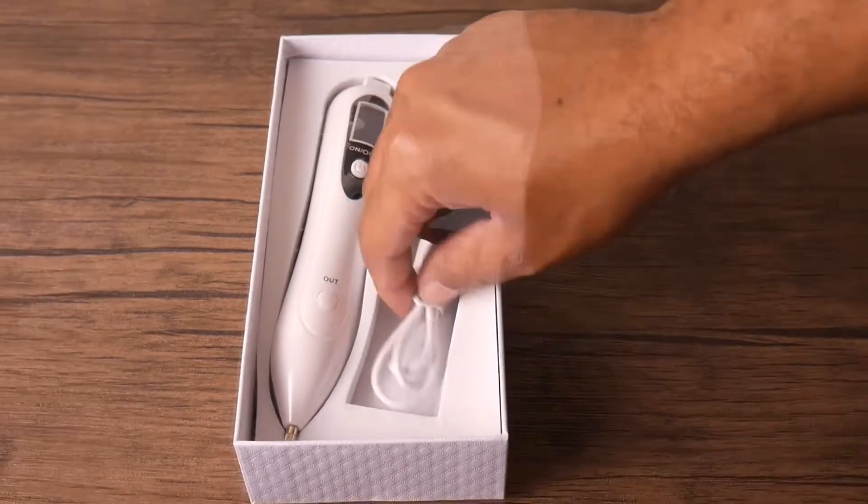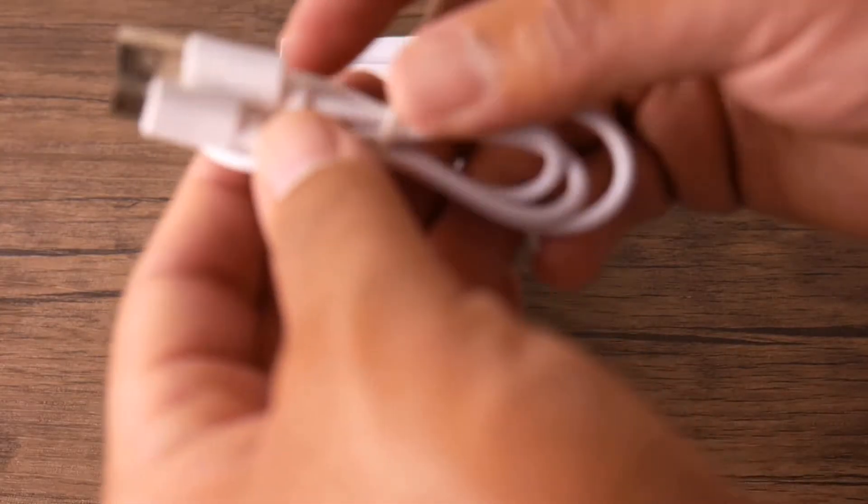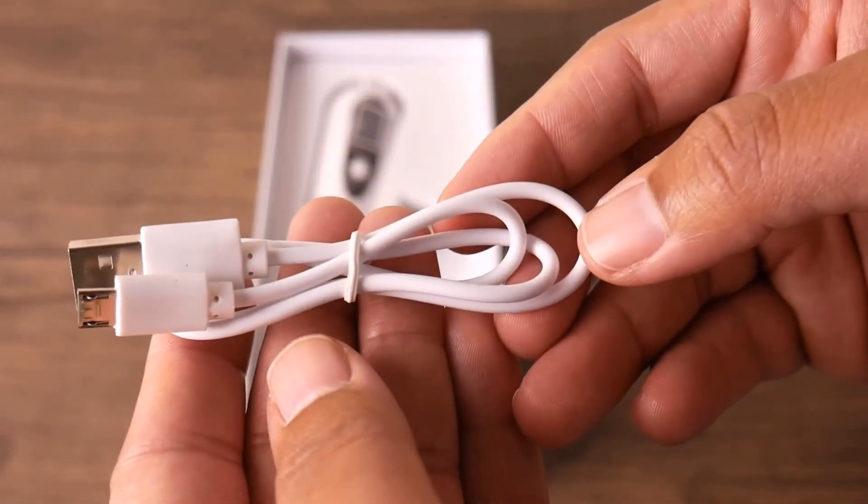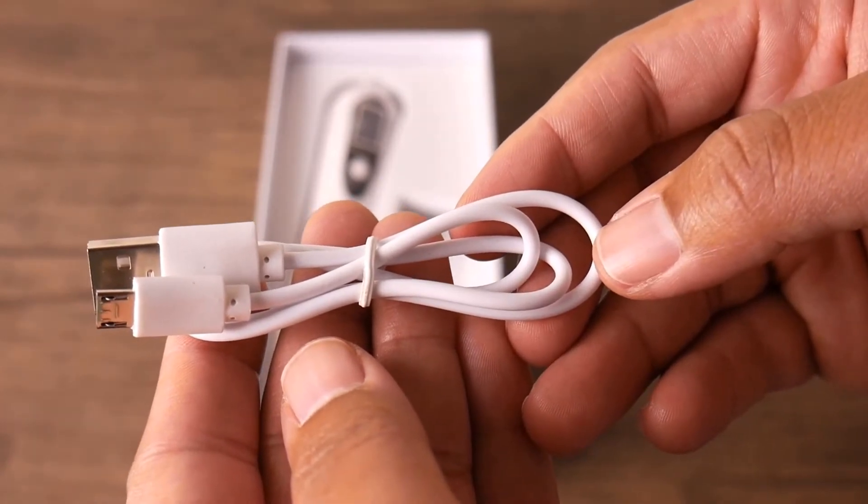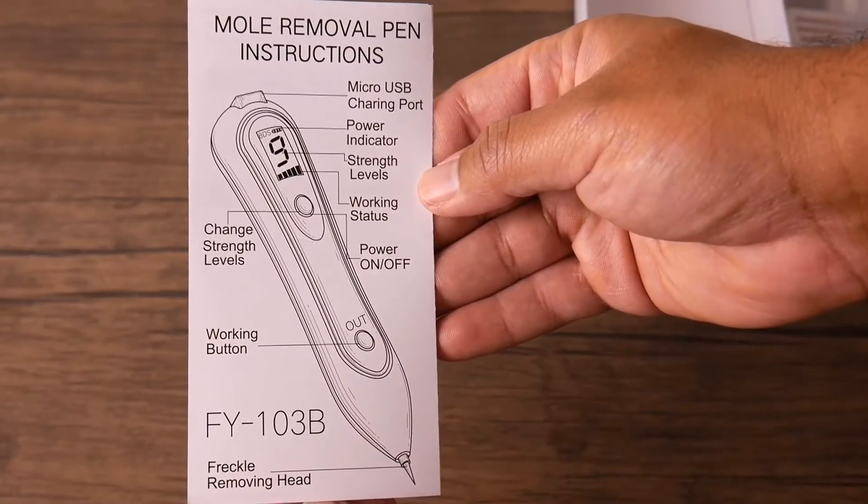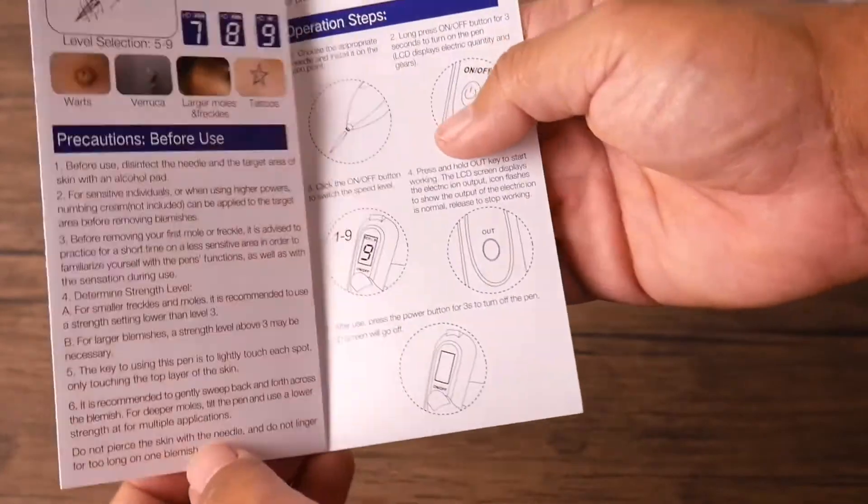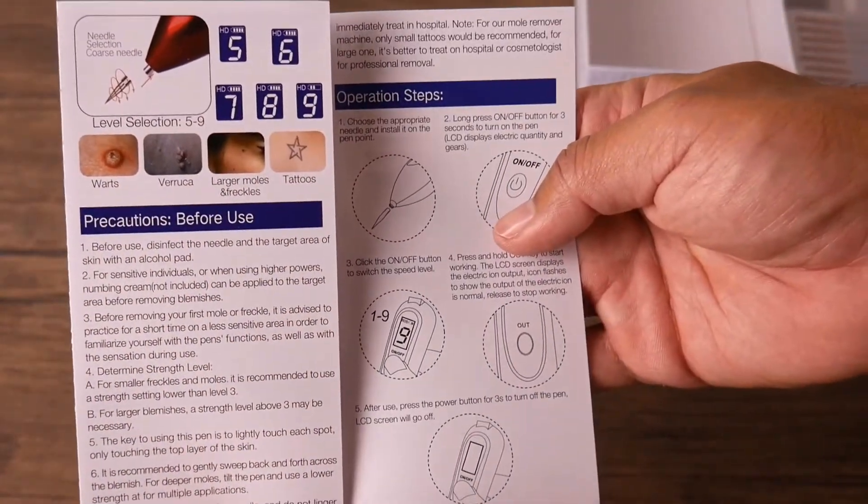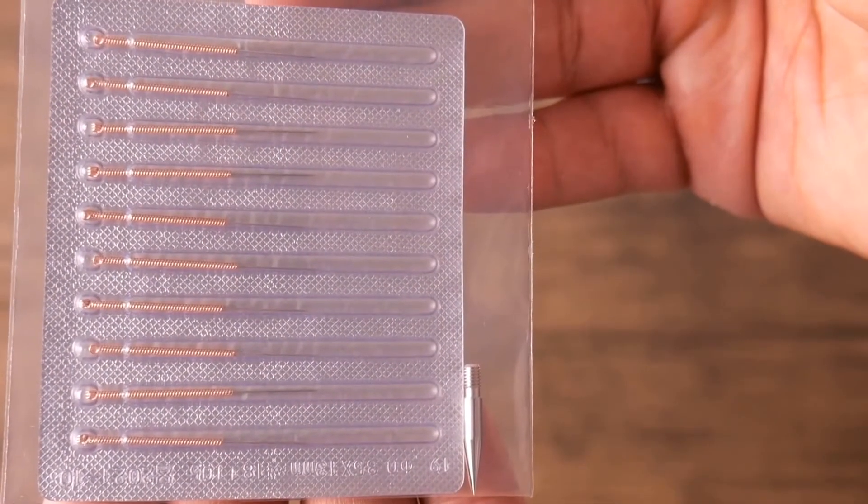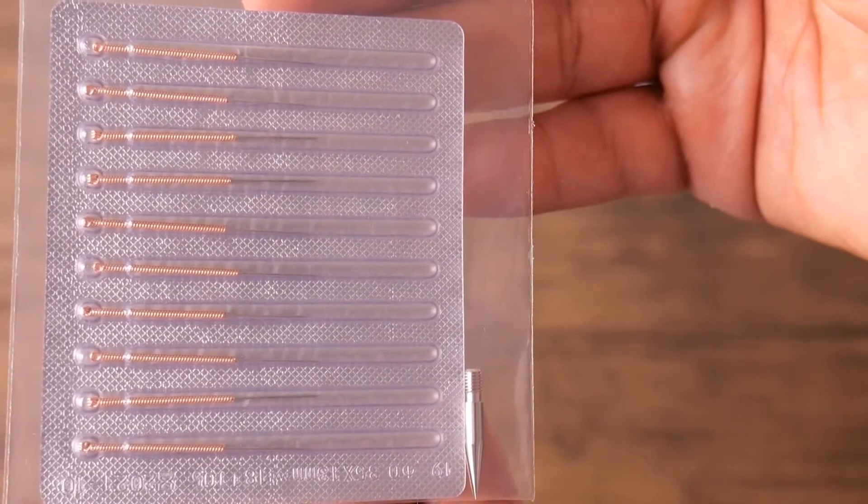Inside of the box, you get everything you would need to operate your spot remover effectively. That includes a micro-USB charging cable, very easy to read instructions, and a schematic inside of your user manual. You get 10 large needles and 1 small needle.